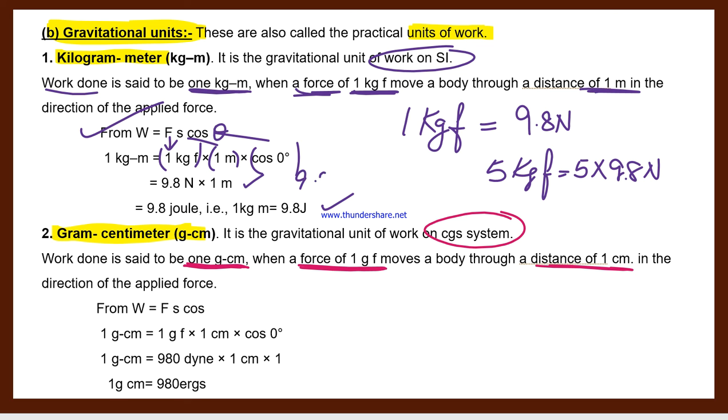So we get 9.8 newton meter. Newton meter can be converted to joule. Similarly for gram-centimeter: W = FS cos theta, one gram force into one centimeter into cos zero equals one. One gram force means we convert: 980 dyne. Why 980? Because in CGS system, not 9.8 newton but 980 comes. So we get the conversion.